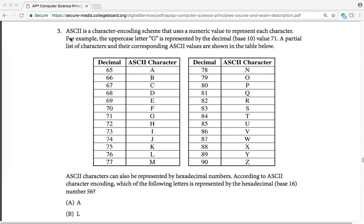Let's read the question. ASCII is a character encoding schema that uses a numeric value to represent each character. For example, the uppercase letter G is represented by the decimal base, which is base 10, value 71. If you look at over here, 71 refers to the letter uppercase G.